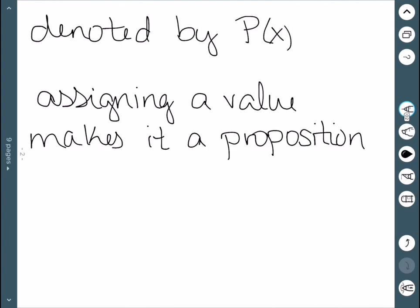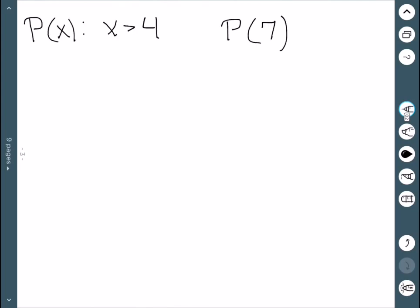We'll do a few examples to see how this works. Our predicate P(x) is given by x is greater than 4, and we want to know the truth value of P(7). P(7) says 7 is greater than 4, which is true. This is now a proposition since it is definitely true.